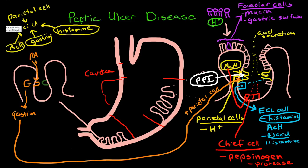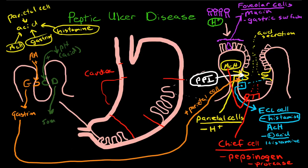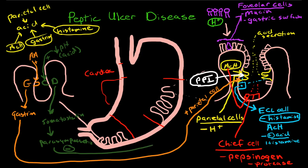The other cell in the antrum is called the delta cell. The delta cell is stimulated by low pH or acid. When there is low pH, the delta cell is stimulated to release somatostatin, and the somatostatin suppresses the parasympathetic nervous system. So it has a negative effect on parietal cell production of hydrogen. Histamine, gastrin, and the parasympathetic nervous system are all positive stimulants, but here we have a negative effect from somatostatin.